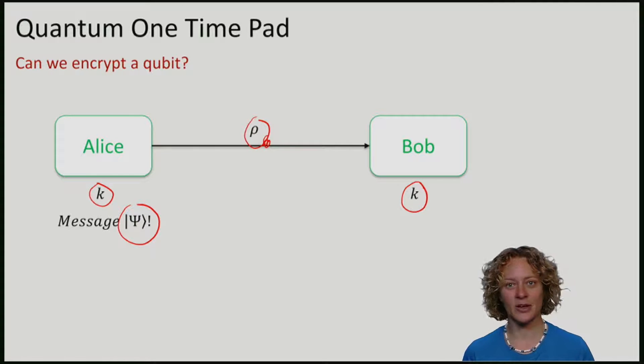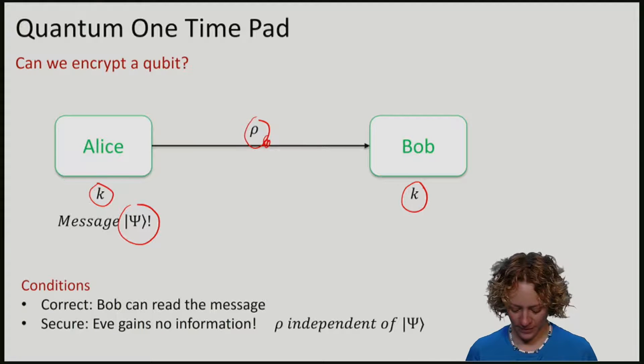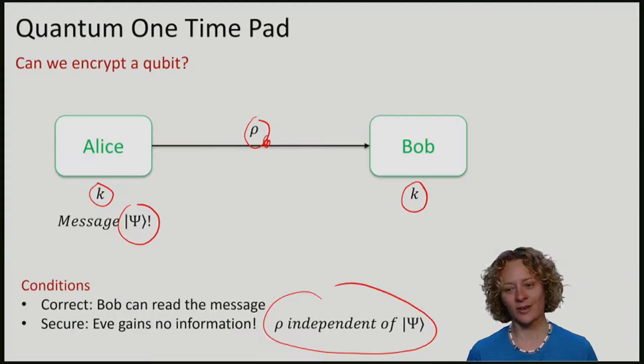To summarize, also when encrypting qubits, we want that the scheme is correct - Bob can recover the qubit. And it is secure, meaning that the state rho that Eve sees is independent of psi.